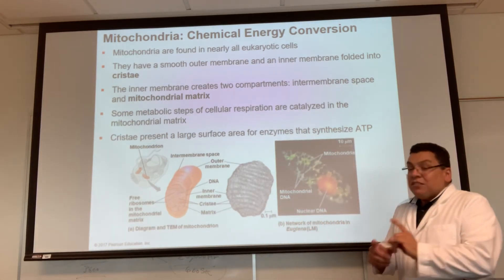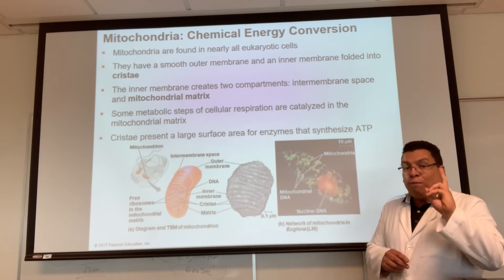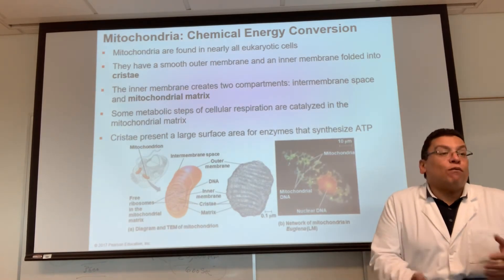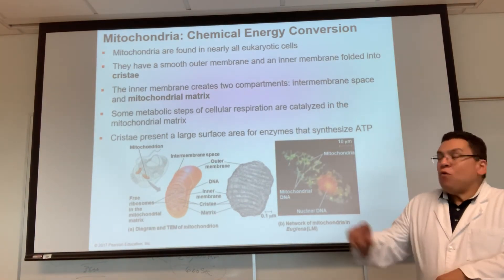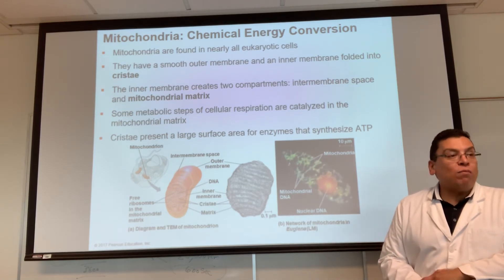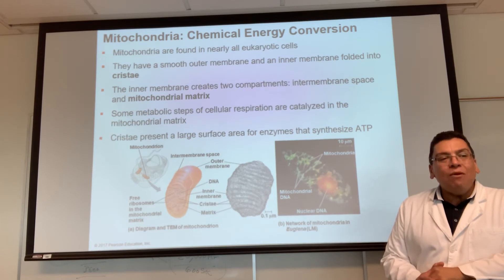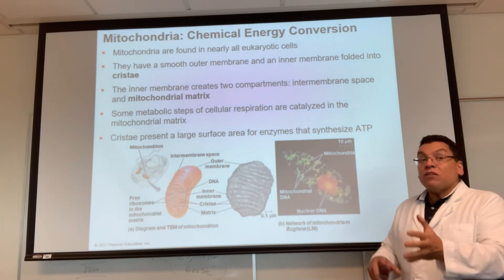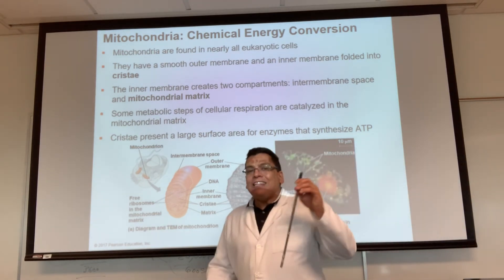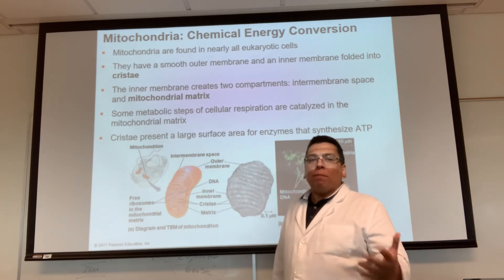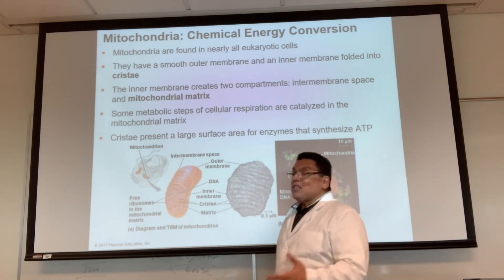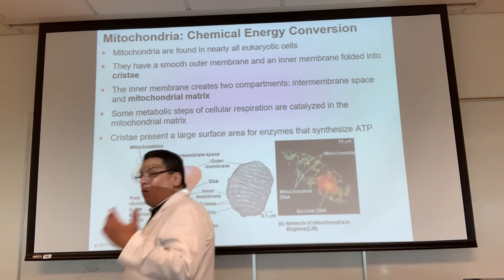So I've given you two pieces of evidence supporting endosymbiosis. Here's an additional one: when mitochondria multiply, they do so like bacteria — by a process called binary fission. We'll talk about binary fission later in chapter 12, but that's an additional piece of supporting evidence. They multiply just like bacteria because they were bacteria.